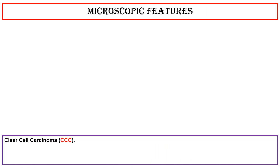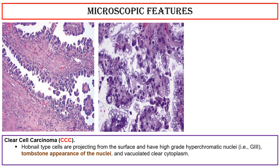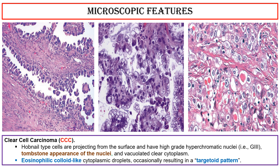Clear cell carcinoma — hobnail-type cells: hobnail cells project from the surface and have high-grade hyperchromatic nuclei — grade 3 tombstone appearance — and vacuolated clear cytoplasm. Eosinophilic colloid-like cytoplasmic droplets are present, occasionally resulting in a targetoid pattern.